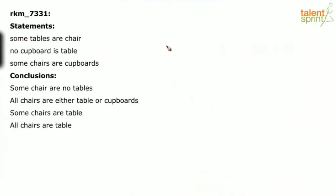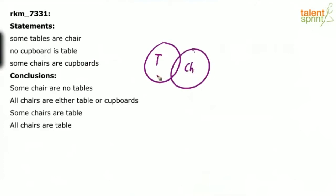What are the statements here? Some tables are chair, no cupboard is stable, some chairs are cupboards. So, cupboards and tables should not touch each other, and some chairs are cupboards.